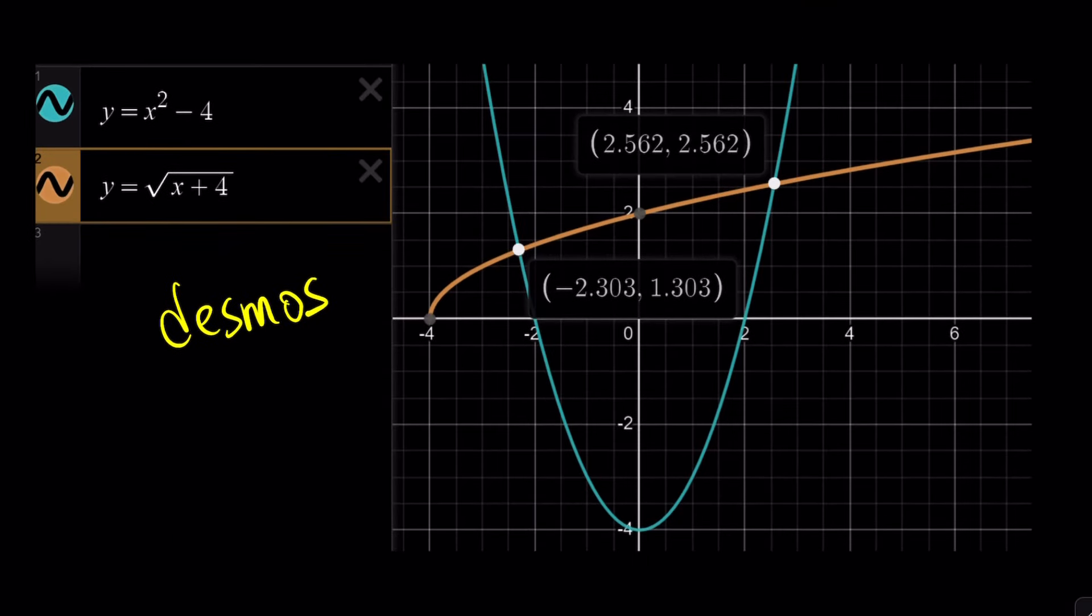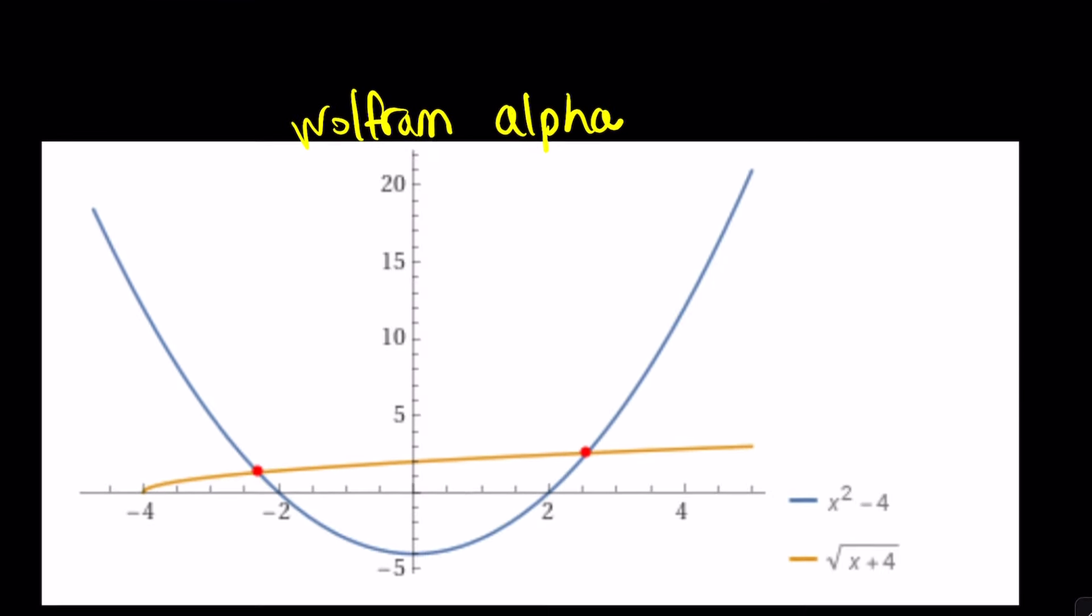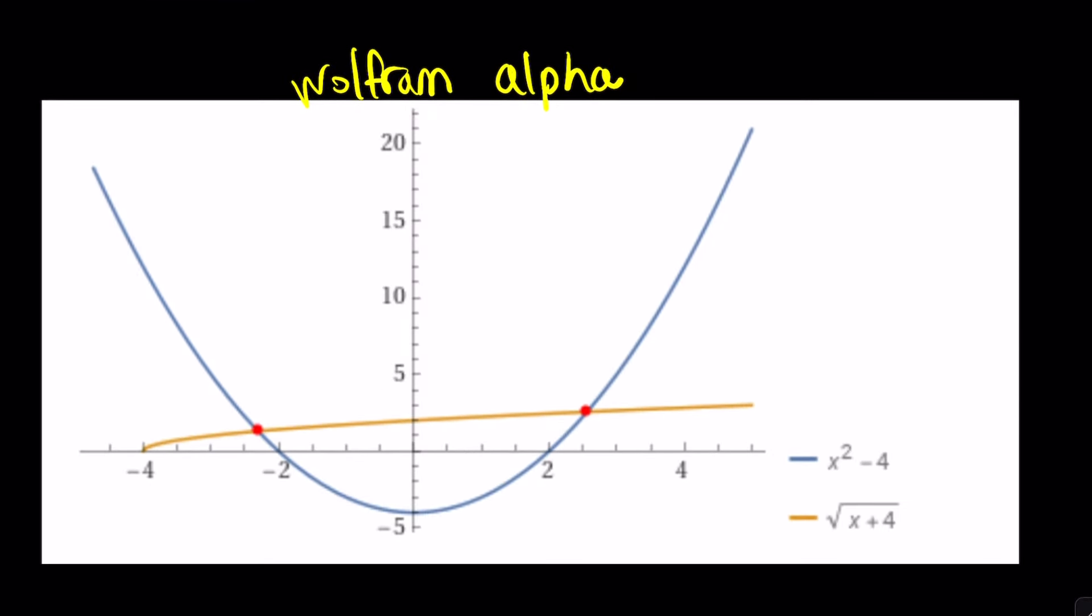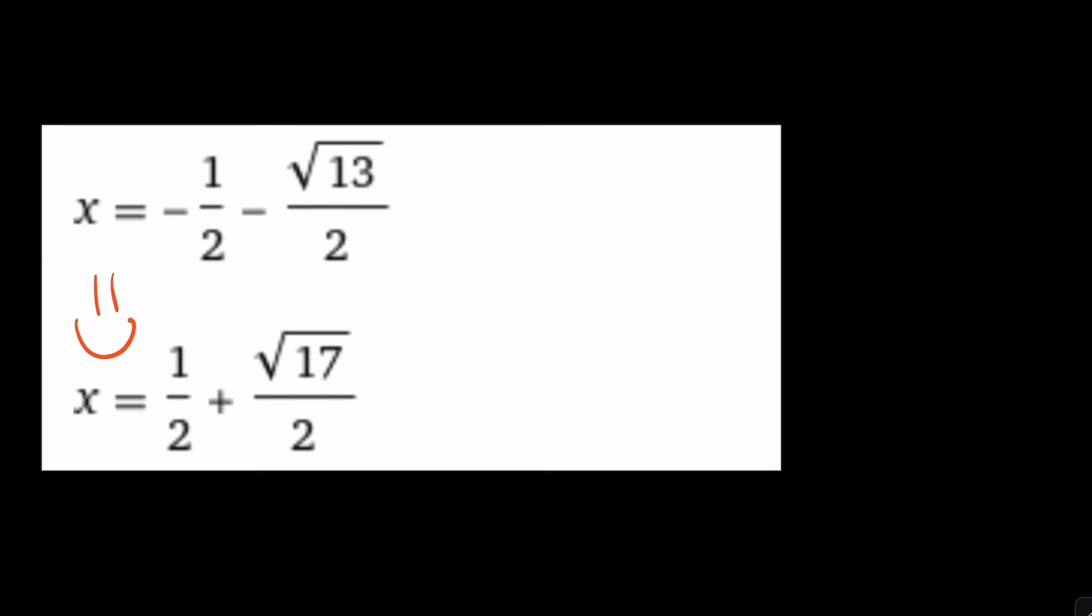Let me go ahead and show you the graphs. This is from Desmos. As you can see, only two solutions, two intersection points. And another graph from Alpha, which is kind of more compact. I like it. And here's the results.